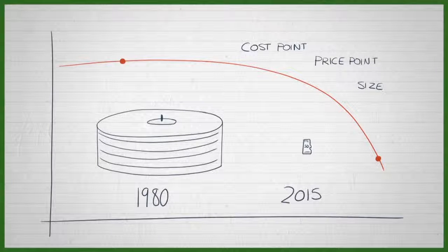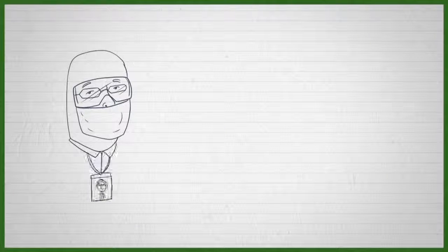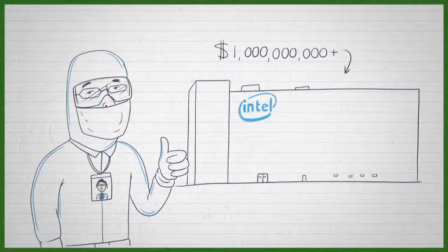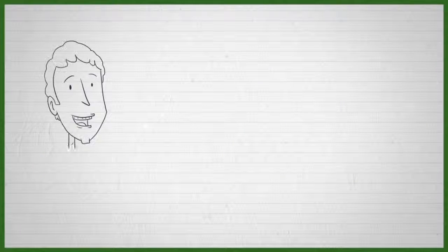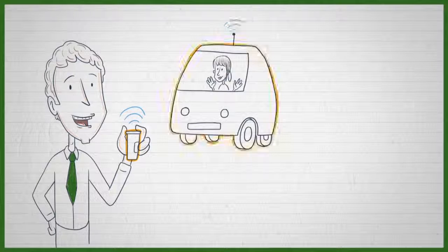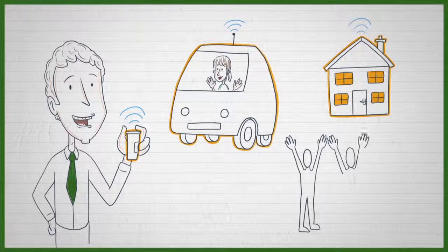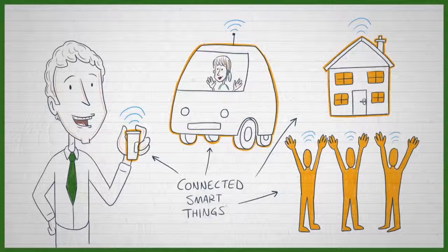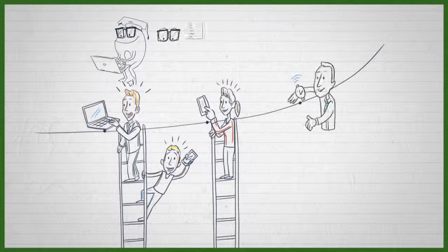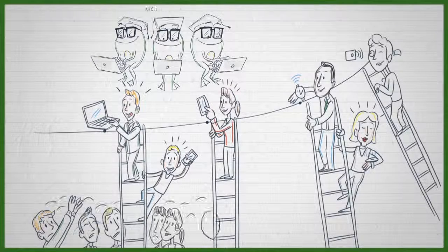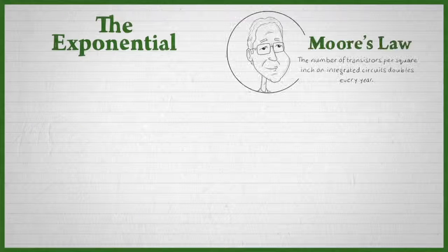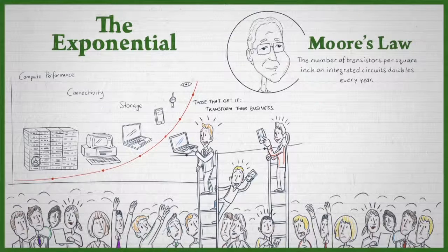And instead of only seeing connected smart things in enormous multi-billion dollar factories, like the semiconductor factories I work in, now that capability is available in pill bottles, cars, in rooms. It's available to all of us. So exponentials can no longer be a little niche high-tech community of folks that understand it and apply it. It needs to be broadly understood and those who get it will transform their businesses and those who don't will be left behind.